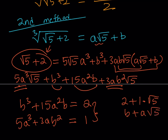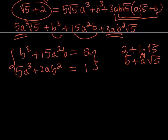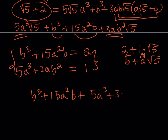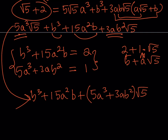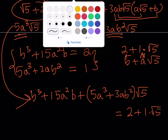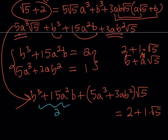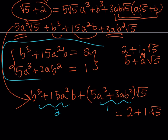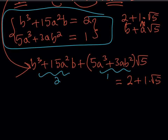To clarify: we're comparing our expanded expression to 2 plus 1 times root 5, the original number. So B cubed plus 15A squared B equals 2, and 5A cubed plus 3AB squared equals 1 — that's our system of equations. It's a cubic system, but a nice one. I'll link a similar problem in the description.